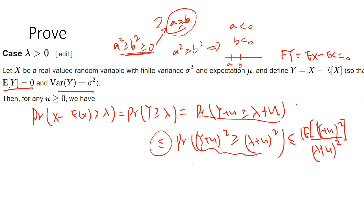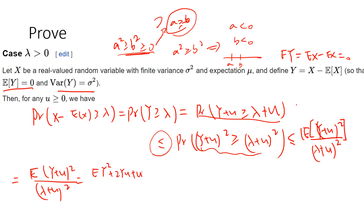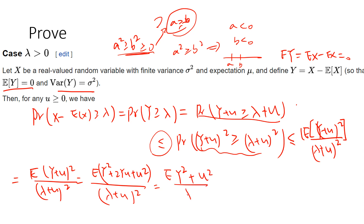So we get E[(Y+u)²] divided by (λ+u)². The denominator we leave as is, but the numerator expands to E[Y² + 2Yu + u²] = E[Y²] + 2u·E[Y] + u². Since E[Y] = 0, this simplifies to E[Y²] + u². And since E[Y] = 0, we have E[Y²] = σ², so the numerator becomes σ² + u².